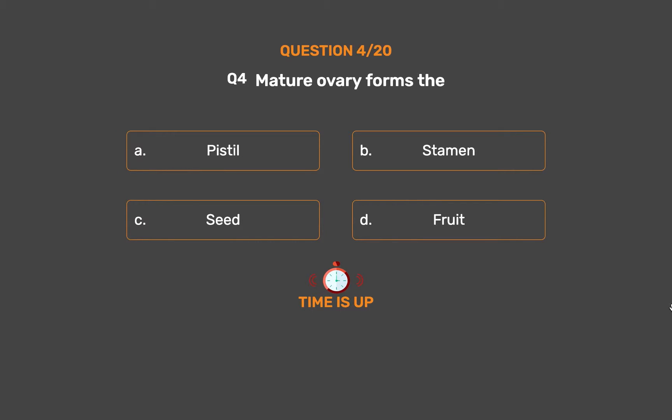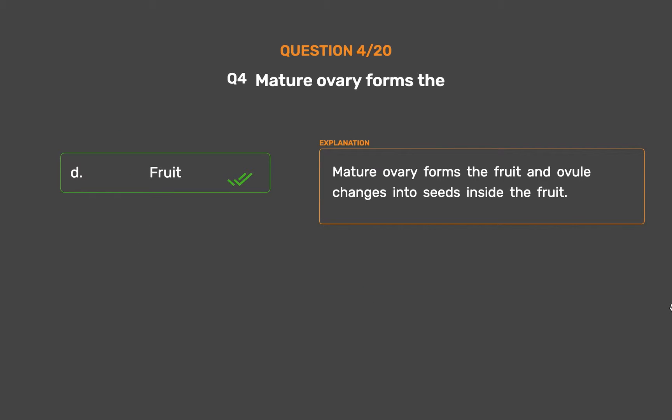The correct answer is Option D – Fruit. The mature ovary forms the fruit, and the ovule changes into seeds inside the fruit.